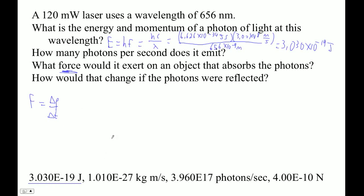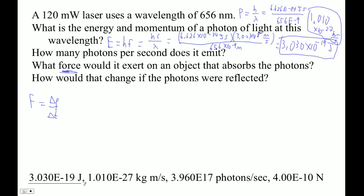Now, what is the momentum? Momentum is h over lambda — this is the de Broglie wavelength equation. So that's 6.626×10⁻³⁴ joule-seconds divided by 656×10⁻⁹. That answer is 1.010×10⁻²⁷ kilogram-meters per second. So there's our energy and there's our momentum.